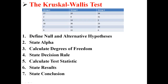Our Kruskal-Wallis test has seven steps. First, we're going to define what our null and alternative hypotheses are. Next, we're going to state our alpha. Then we're going to calculate our degrees of freedom. Then we state our decision rule. Then we actually calculate the test statistic. And then finally we state our results and our conclusion.